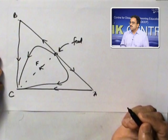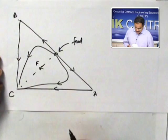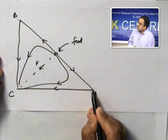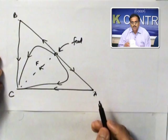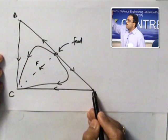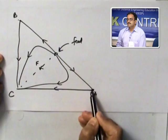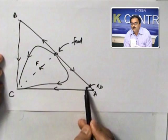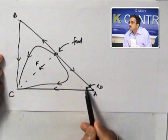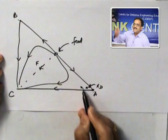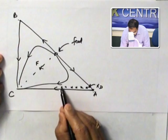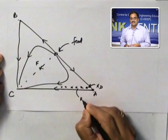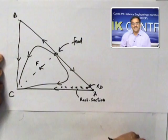Suppose I want pure A at the top. Suppose I want pure A at the top — let us assume. Then I am removing pure A from the top. The column profile, as I go from top to bottom, will move in which direction? I am starting from this as my x_D. In spite of it being a saddle, I say I remove it from the top. Which direction will I move when I go to the bottom — in this direction or that? Towards C, because I will follow the residue curve. Rectifying section follows the residue curve, so I will move in this direction. This is my rectifying section profile.